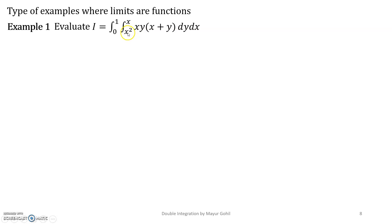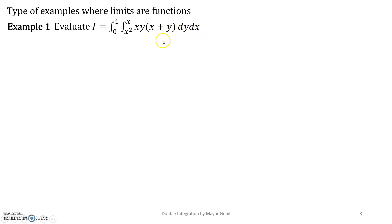In our previous video lecture, when the limits were constant numbers, their interchange was possible. But here it is not possible. There are certain theorems and rules to be followed — we will see in subsequent lectures how we can change the order of integration. For now, let us take up this example and solve.